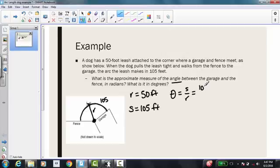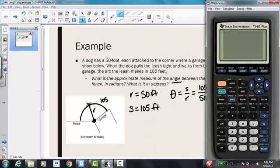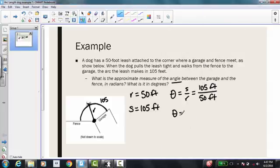So we have 105 feet divided by 50 feet. Using my calculator, 105 divided by 50, I get 2.1. So theta equals 2.1 radians.